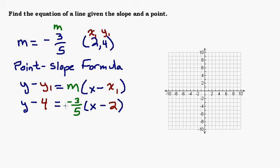So first thing we're going to do is distribute this negative 3 fifths into the parentheses. We're going to put it in slope intercept form in y equals mx plus b form. So we get y minus 4 equals negative 3 fifths x. And then negative 3 fifths times 2, you could think of that as 2 over 1 if you want. A negative times a negative makes a positive. And then we have 6 on the top and 5 on the bottom.